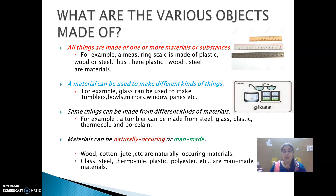A material can be used to make different kinds of things. For example, glass can be used to make tumblers, bowls, mirrors, windowpanes, etc. Also, the same thing can be made from different kinds of materials. For example, a tumbler can be made from steel, glass, plastic, thermacole and porcelain.